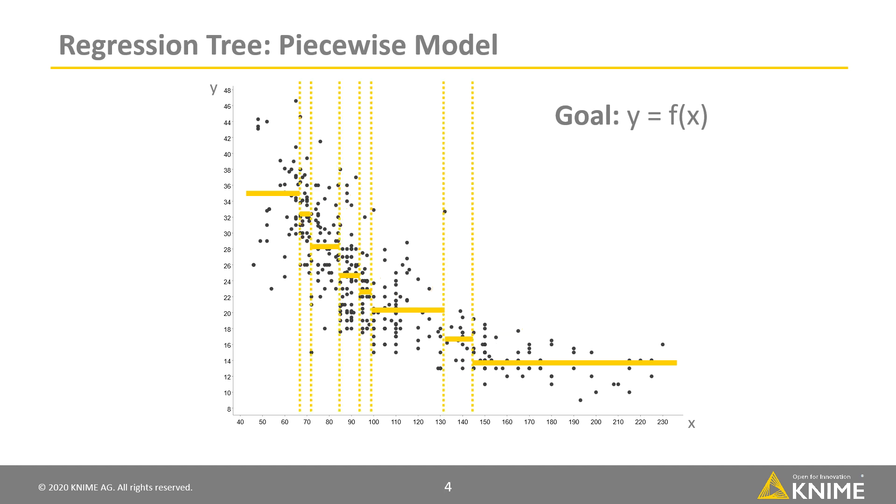In a regression tree model, as you can see, a constant value is fitted within each segment. This way, we can model any linear and non-linear relationships between x and y without explicitly specifying a continuous mathematical function between them.